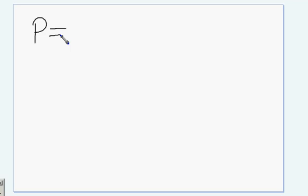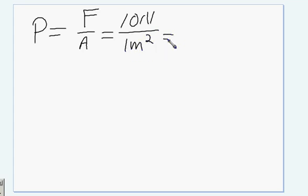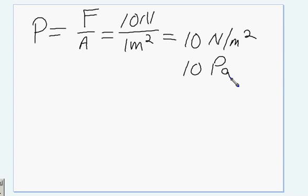Okay, pressure equals force divided by area. Our force here is 10 newtons. Our area here is 1 square meter. So 10 divided by 1 is 10 newton meters squared, which is 10 pascals.